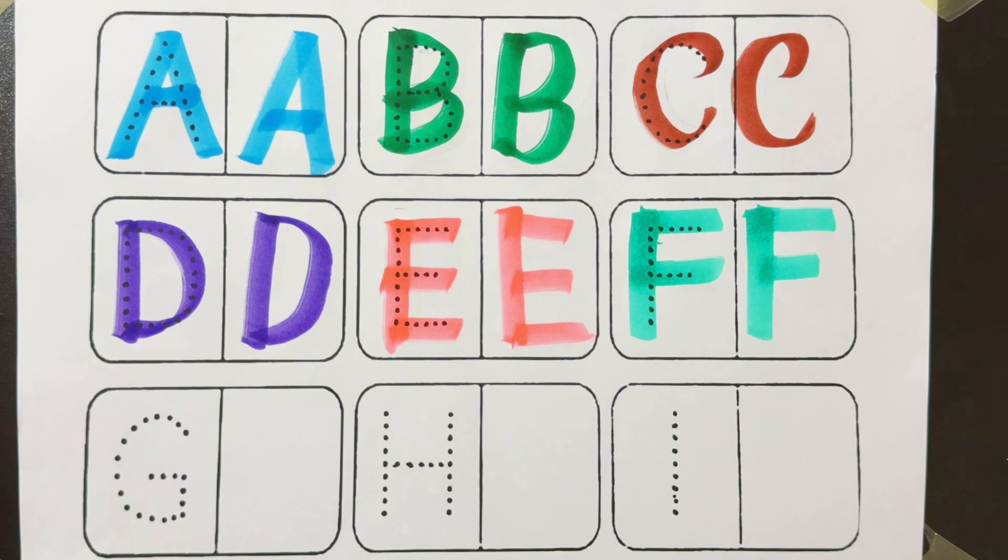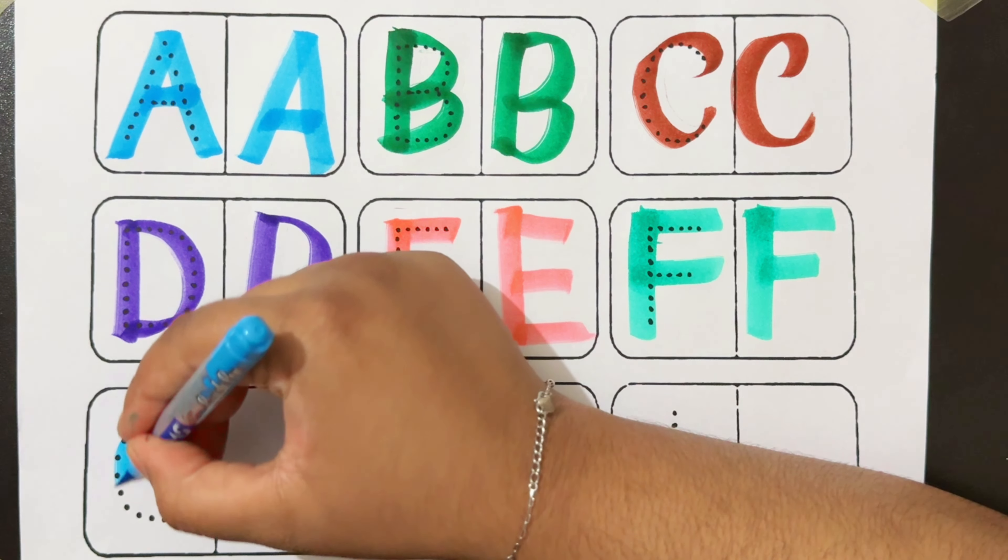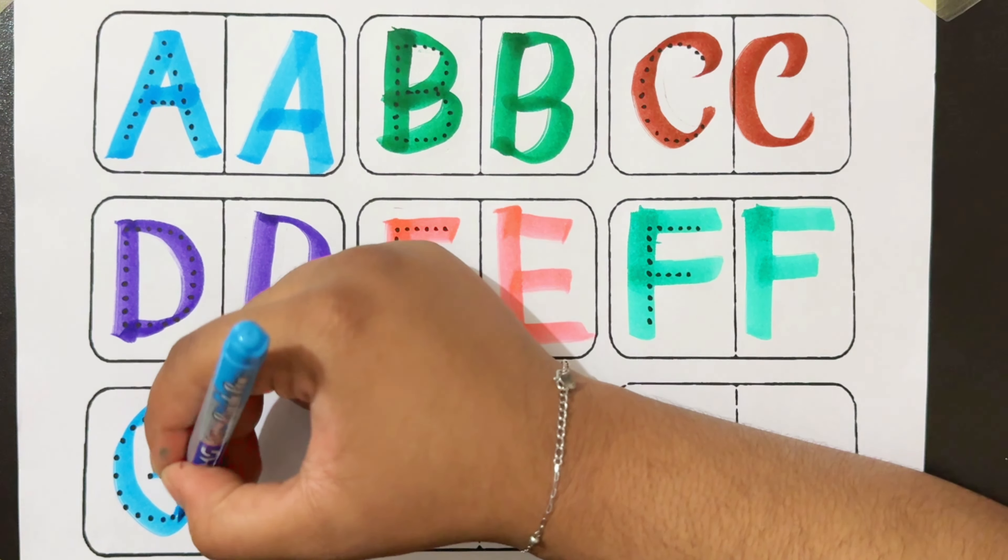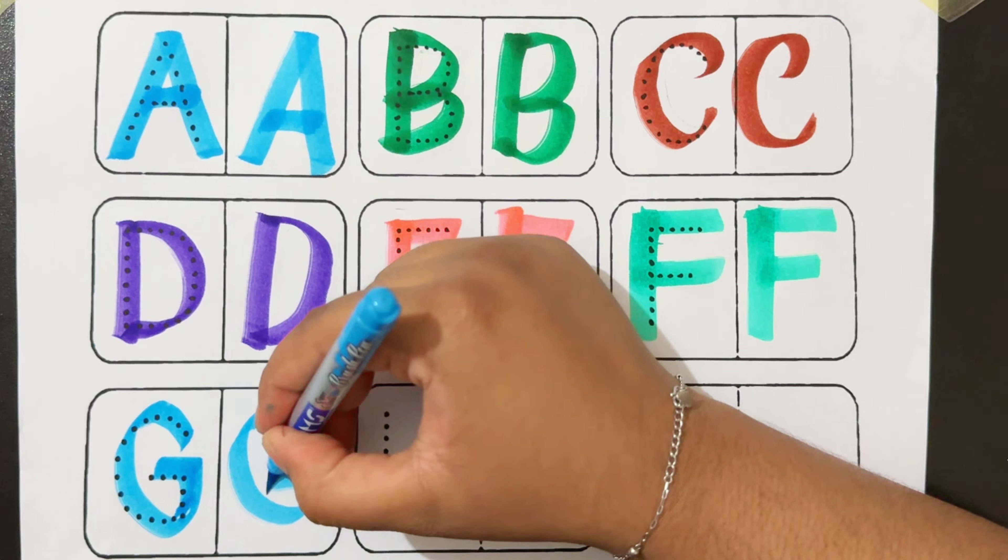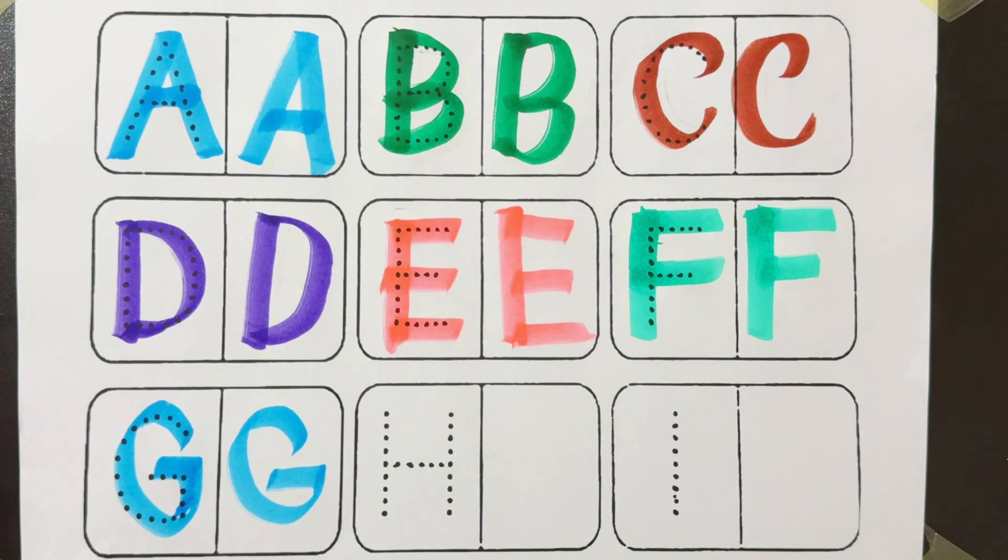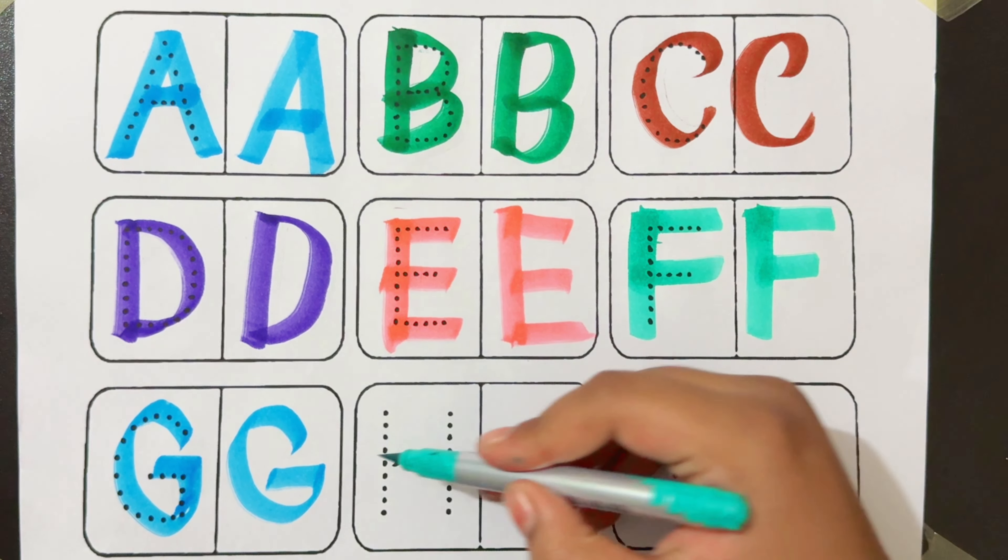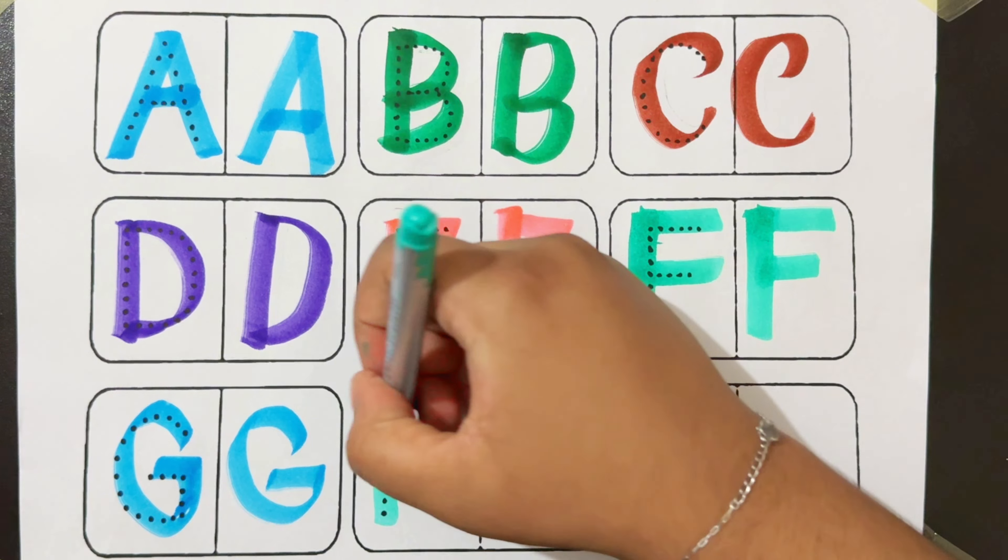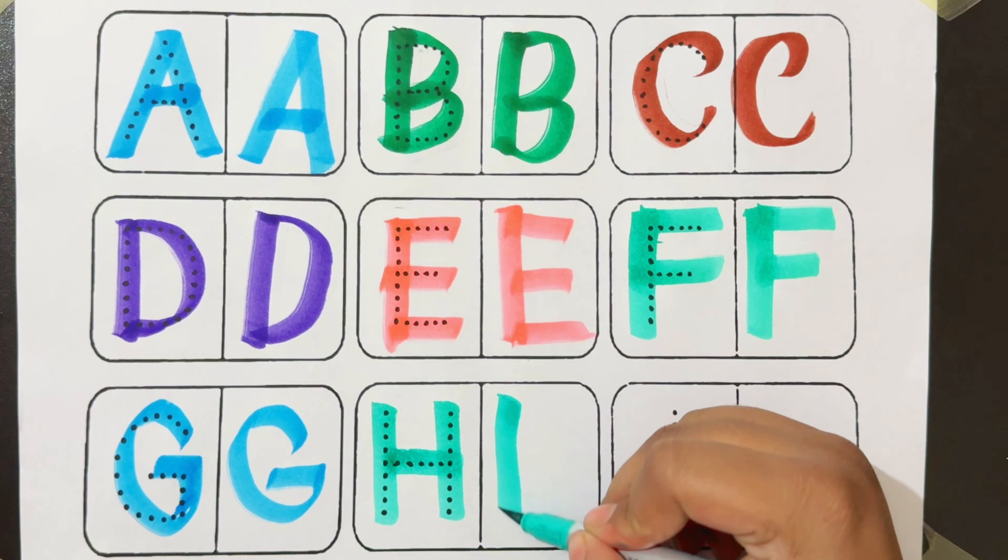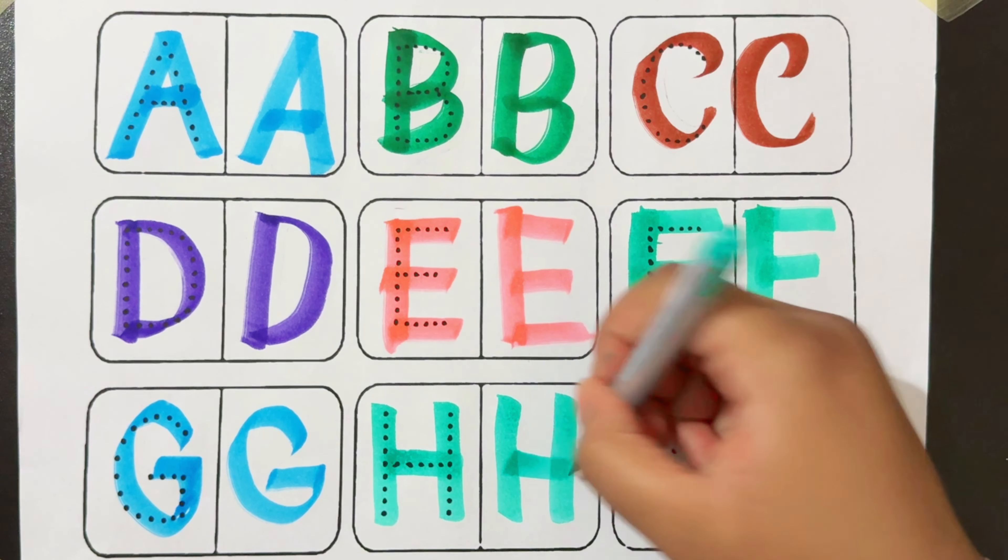Letter G: G for grass, G for garden. Letter H: H for helicopter, H for hand.